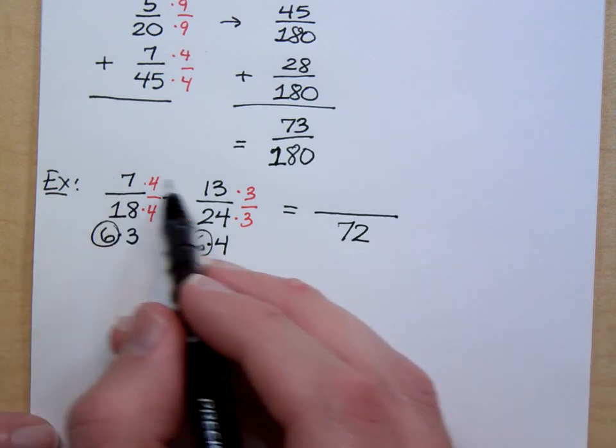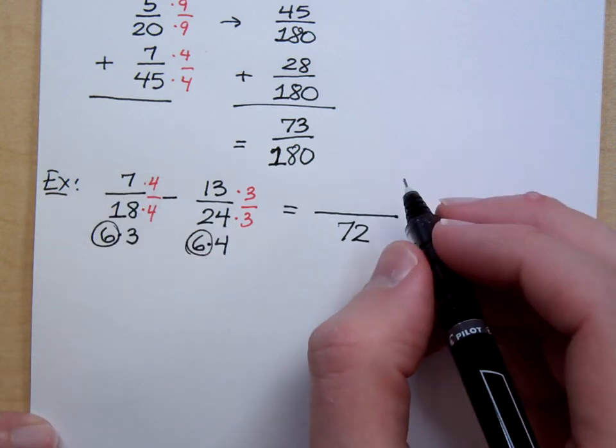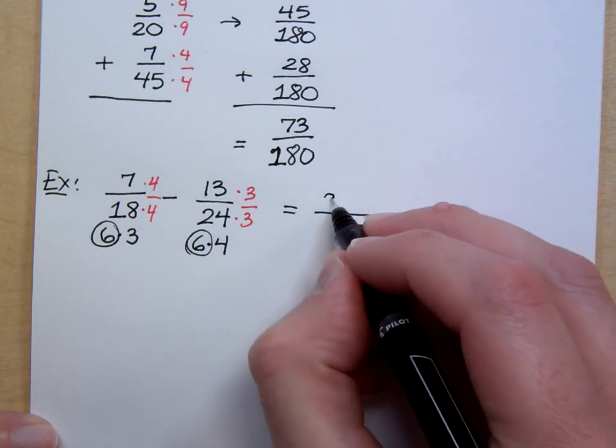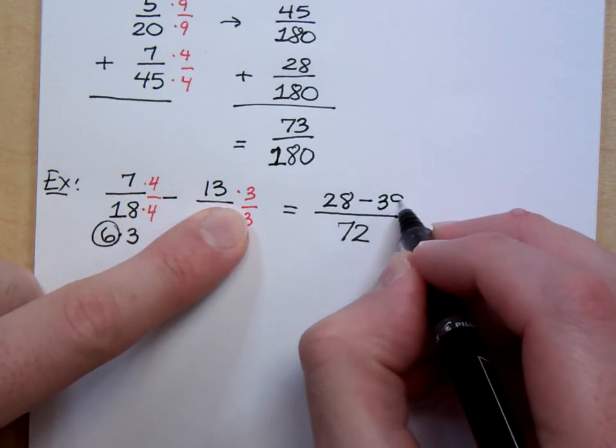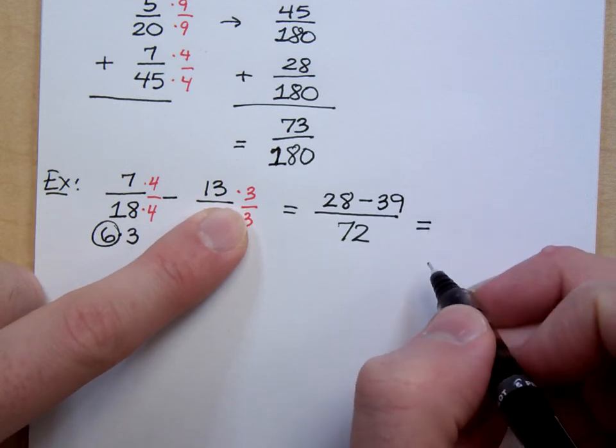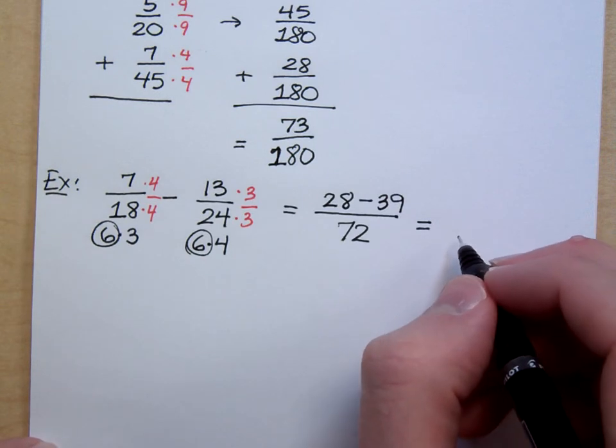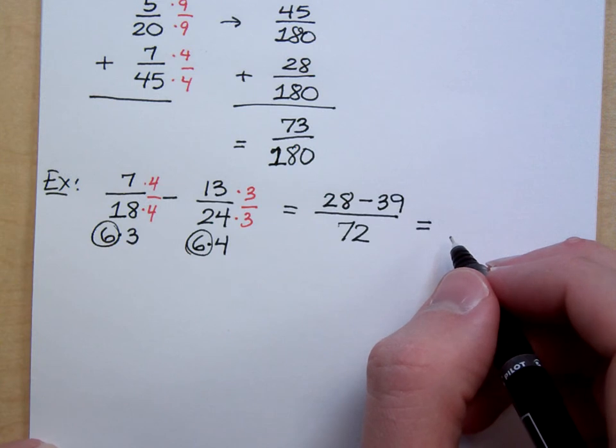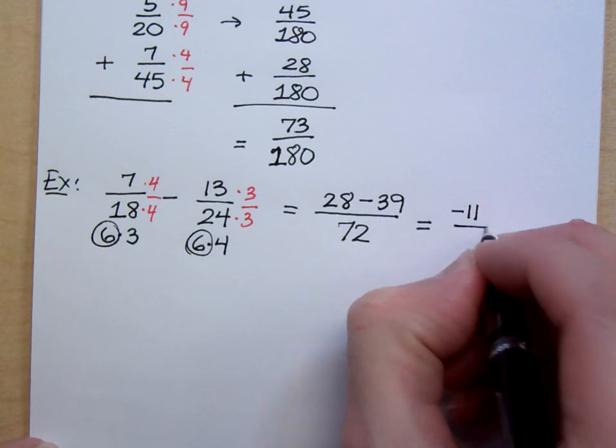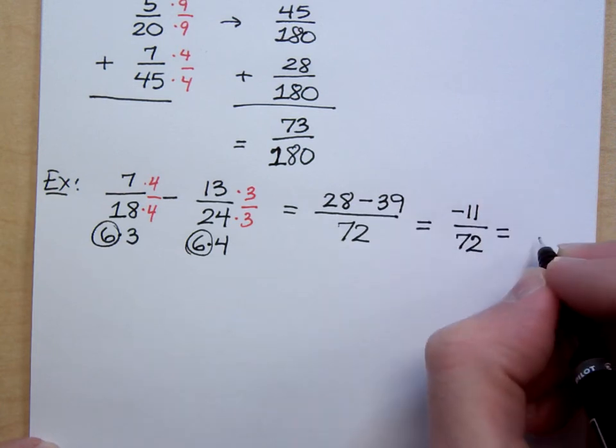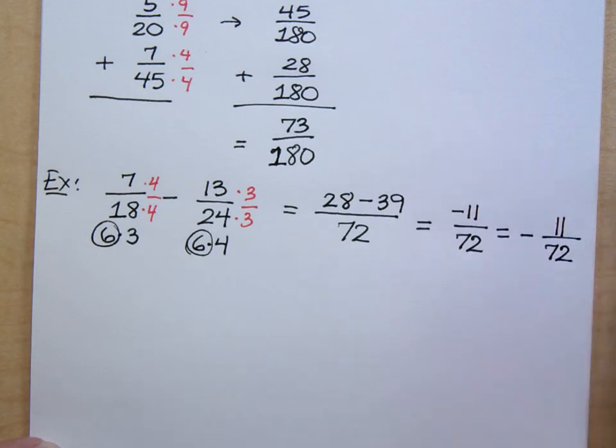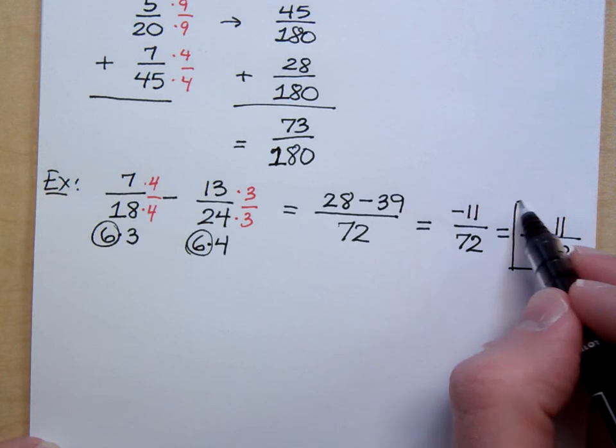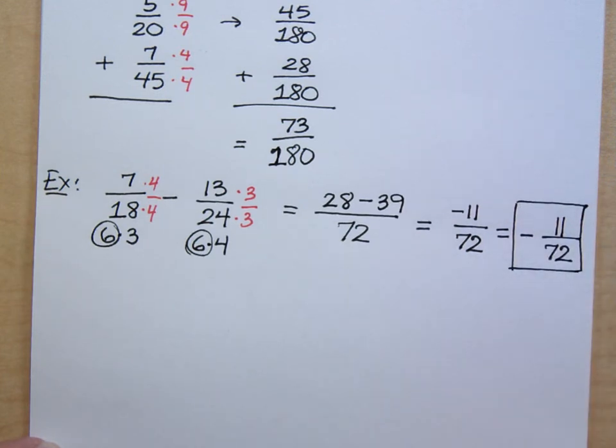But, what is that common denominator? You can either do 18 times 4 or 24 times 3. Whichever one you do, you should still get the same answer, which is 72. And so, what does your numerator look like whenever you do the rest of this work? 7 times 4 is 28. Don't forget this is a minus. So, minus 13 times 3? It's 39. And what's 28 minus 39? Well, it's negative 11. Now, we could write this as negative 11 over 72. But, I've shown you that the best way of writing a negative fraction like this is to put the negative in front of the fraction bar and say negative 11 over 72. This is the way we would write that. And this guy is in lowest terms. There's nothing common between 11 and 72.